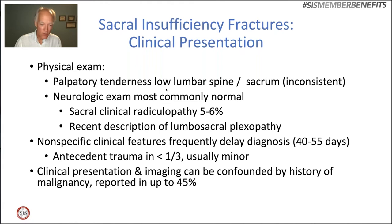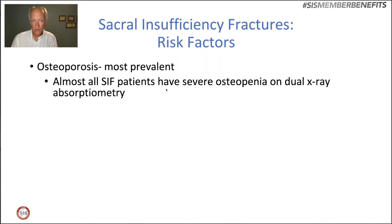When you have a patient with new pain without significant trauma and a history of malignancy, the old adage is: if you hear hoof beats, look for horses — and those horses here would be malignancy. But this is the zebra you have to know about: sacral insufficiency fractures are an important diagnosis to make. The risk factors include osteoporosis — the most prevalent — with virtually all sacral insufficiency fracture patients showing severe osteopenia on x-ray absorptiometry.